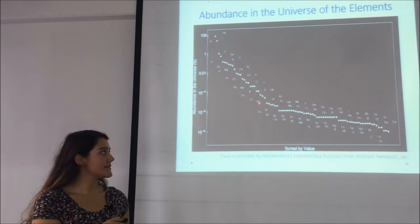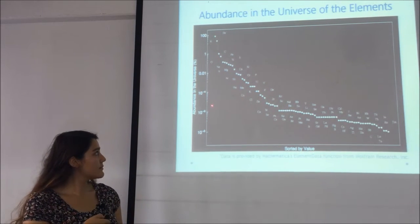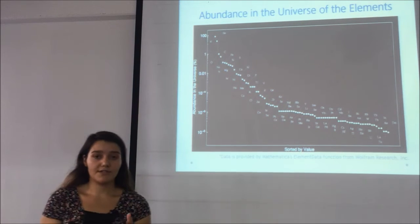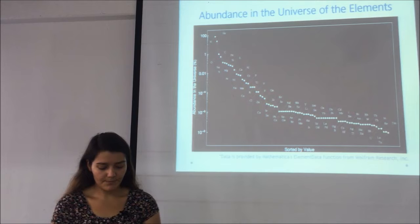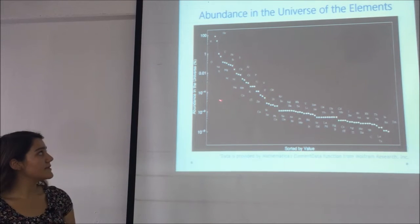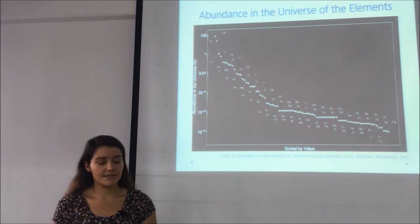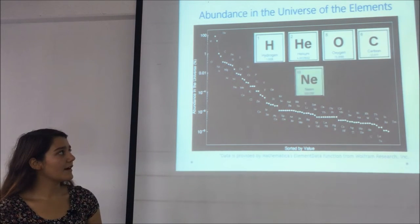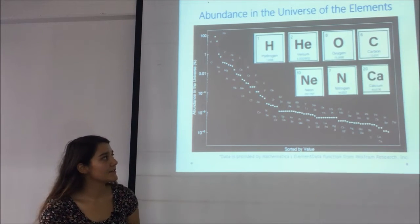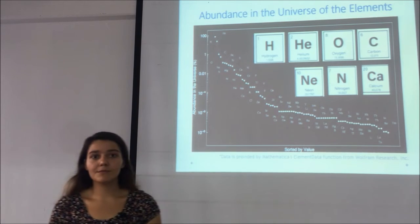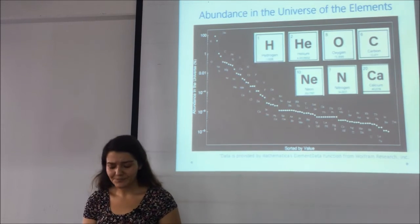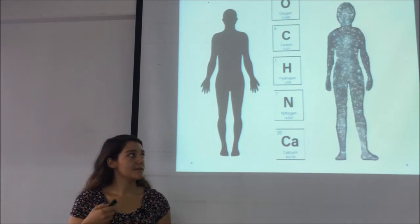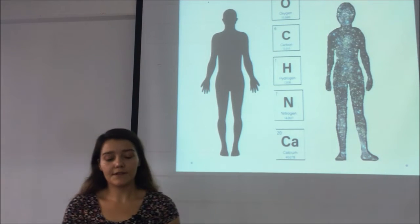We can see that most of the elements have very low percentages. For example, if you look at zinc, which is right here, it has a percentage of about 10 to the minus 5%, which is very small. Well, what we have between 0.01% and 100%, we have hydrogen, helium, oxygen, carbon, neon, nitrogen and calcium. Most of them sound familiar, right? It is because the elements in our bodies and the elements in the universe are significantly similar.